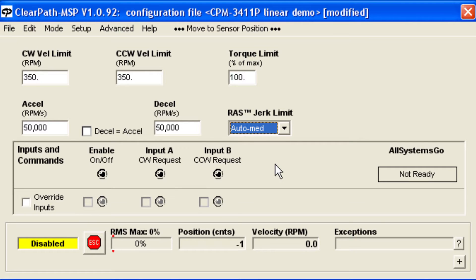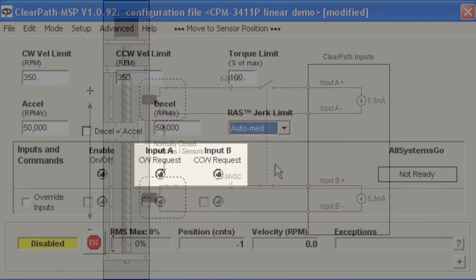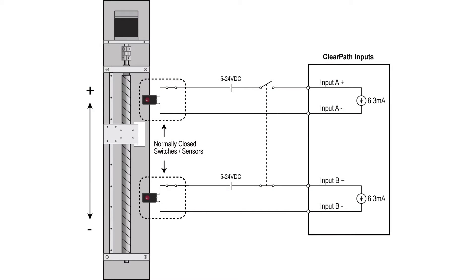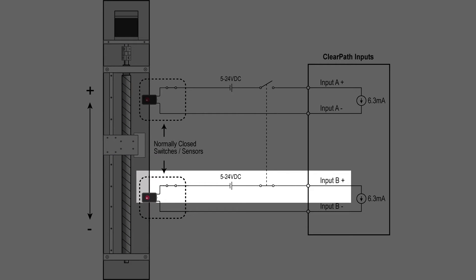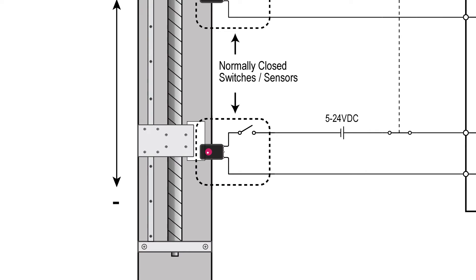Turning on ClearPath's A input requests clockwise motion, and likewise, the B input requests counterclockwise motion. In this mode, you wire your position sensors in series with your A and B signals. This way, when you hit a sensor, the input signal will be interrupted, causing the axis to smoothly ramp to a stop.